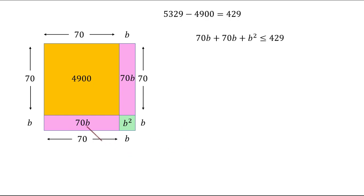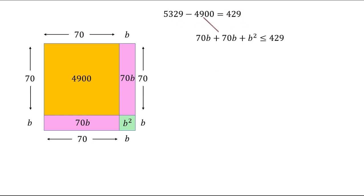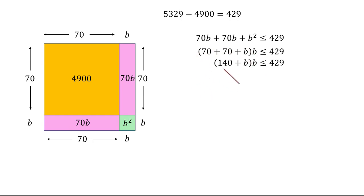We factor B out: (70 + 70 + B) × B = 429. That gives us (140 + B) × B = 429. This is the equation we need to solve — we need to find B such that (140 + B) × B equals 429 or less.